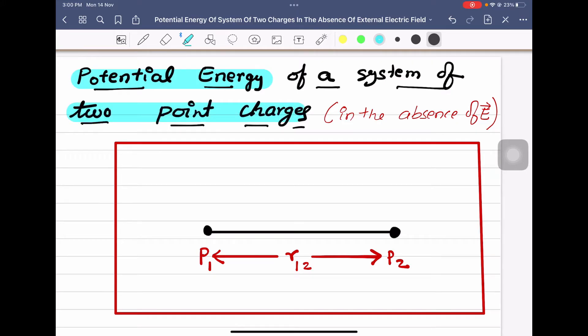Let us suppose that there is no external electric field. Now we will consider two points, P1 and P2.